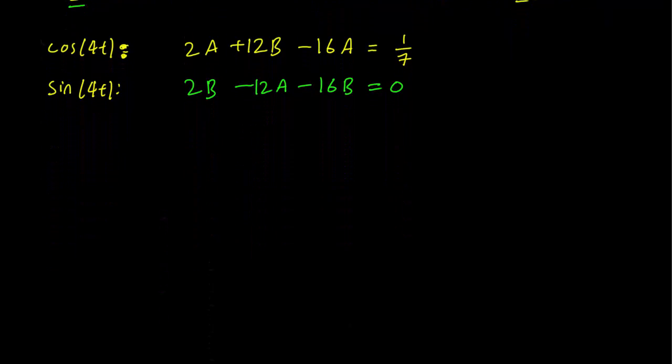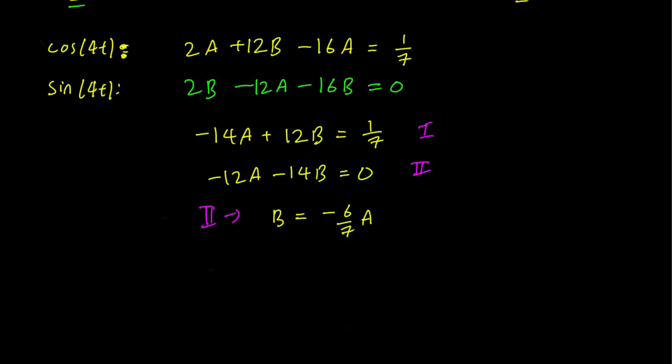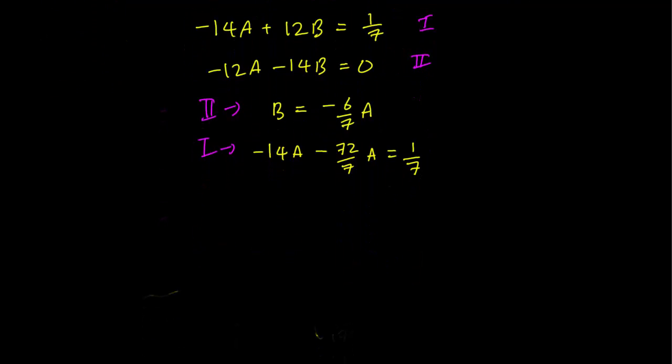And this gives us a system of two equations: -14A + 12B = 1/7, -12A - 14B = 0. Let's label these equations 1 and 2. And from 2, we immediately get a relation between A and B. So B is just going to be equal to -6/7*A. And plugging that in to the first equation, we get that -14A - 72/7*A = 1/7. And multiplying by 7, we get -98A - 72A = 1, or -170A = 1, A = -1/170.